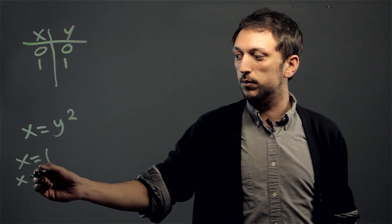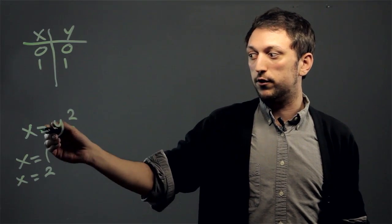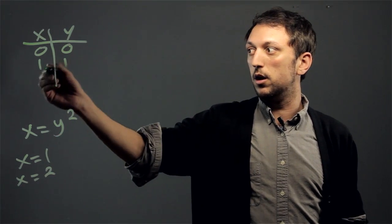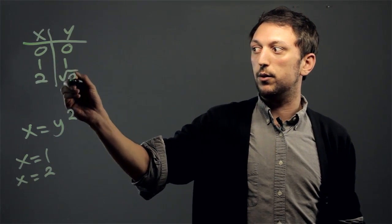If x equals 2, then we say 2 equals y squared, and we'd have to take the square root of y and the square root of 2, so we'd get the square root of 2, and so on.